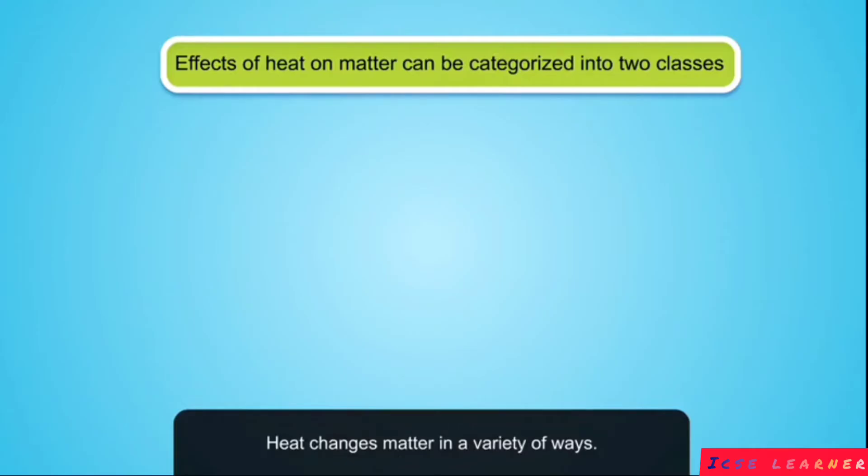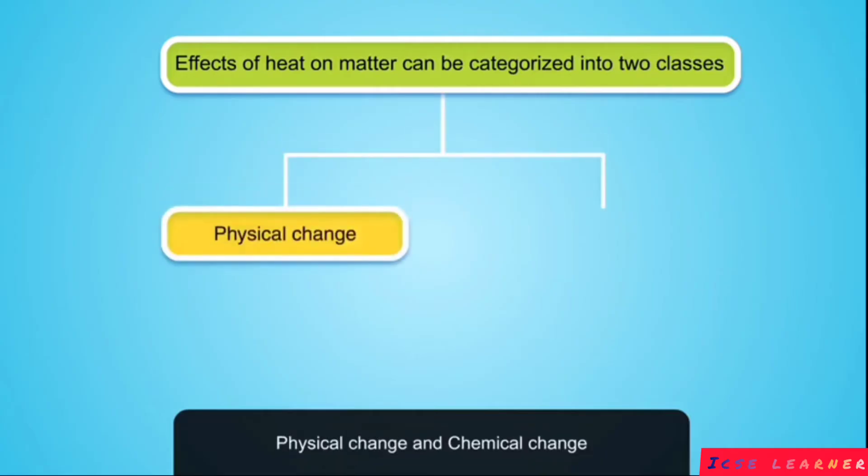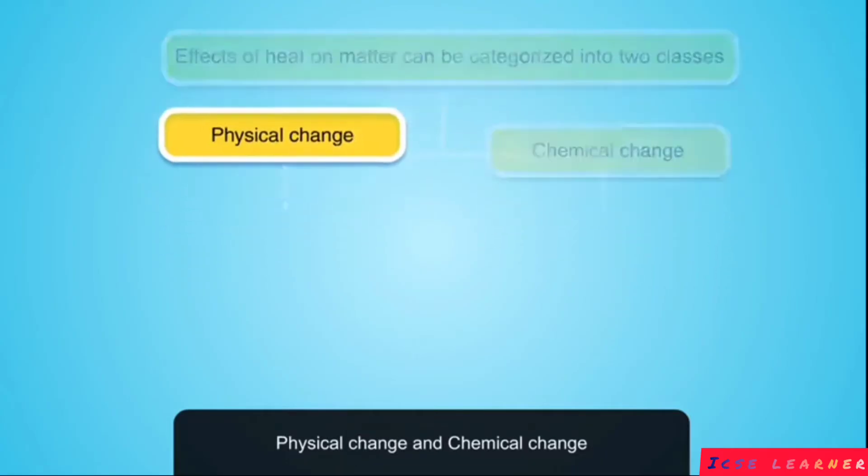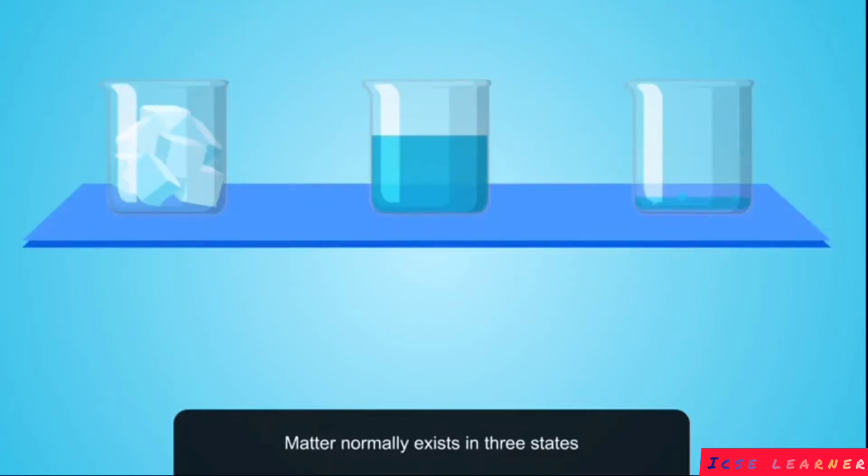Heat changes matter in a variety of ways. The main effects of heat on matter can be grouped into two categories: physical change and chemical change. Physical changes include change in state and change in size of the matter due to heat.